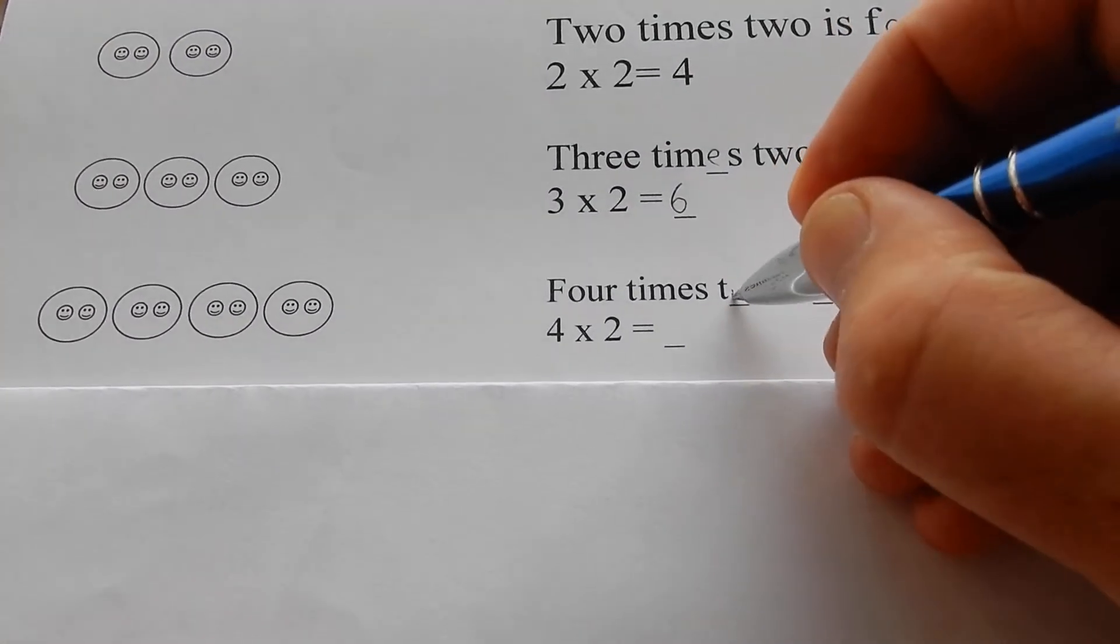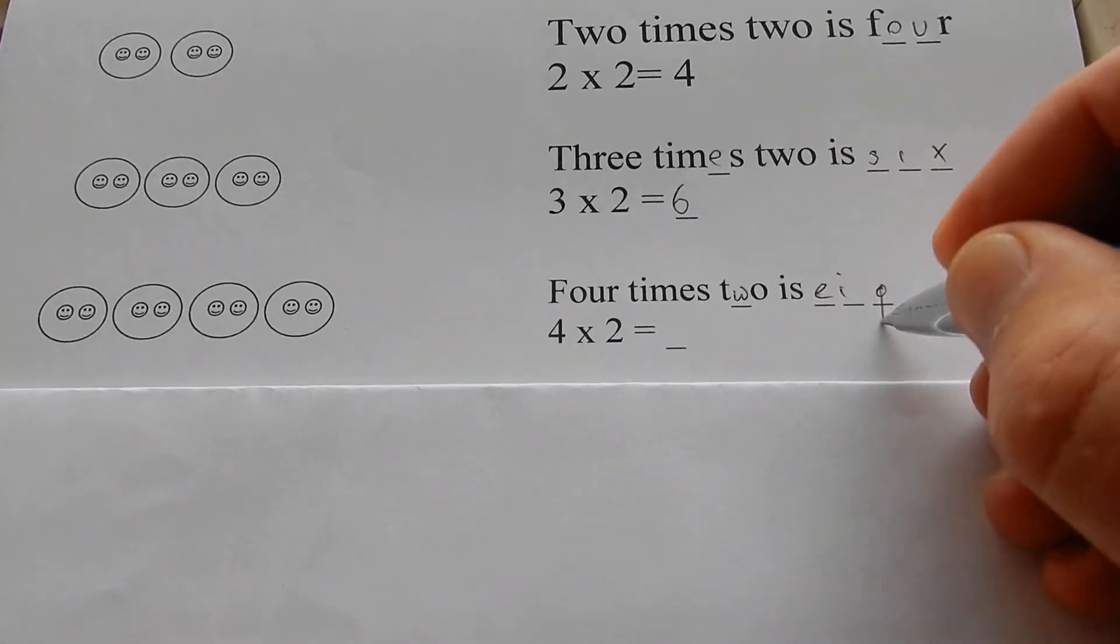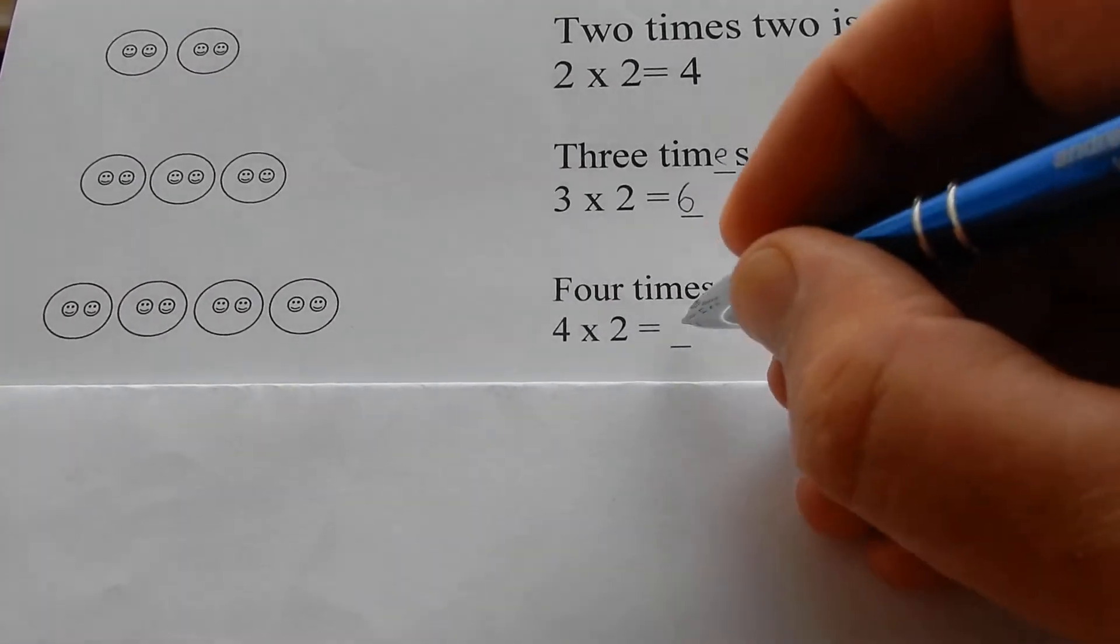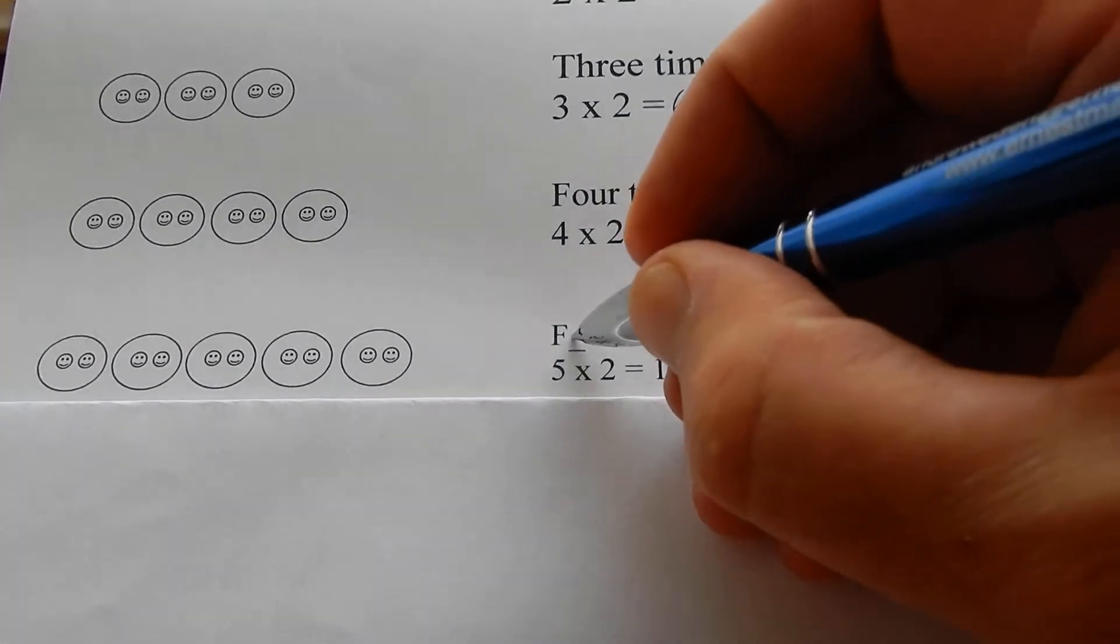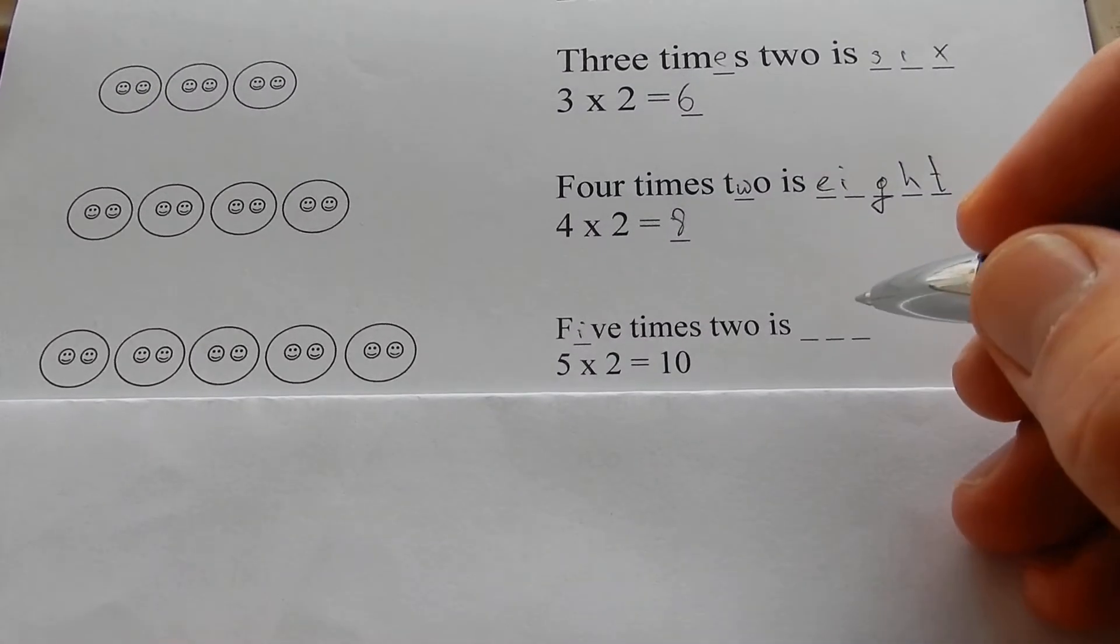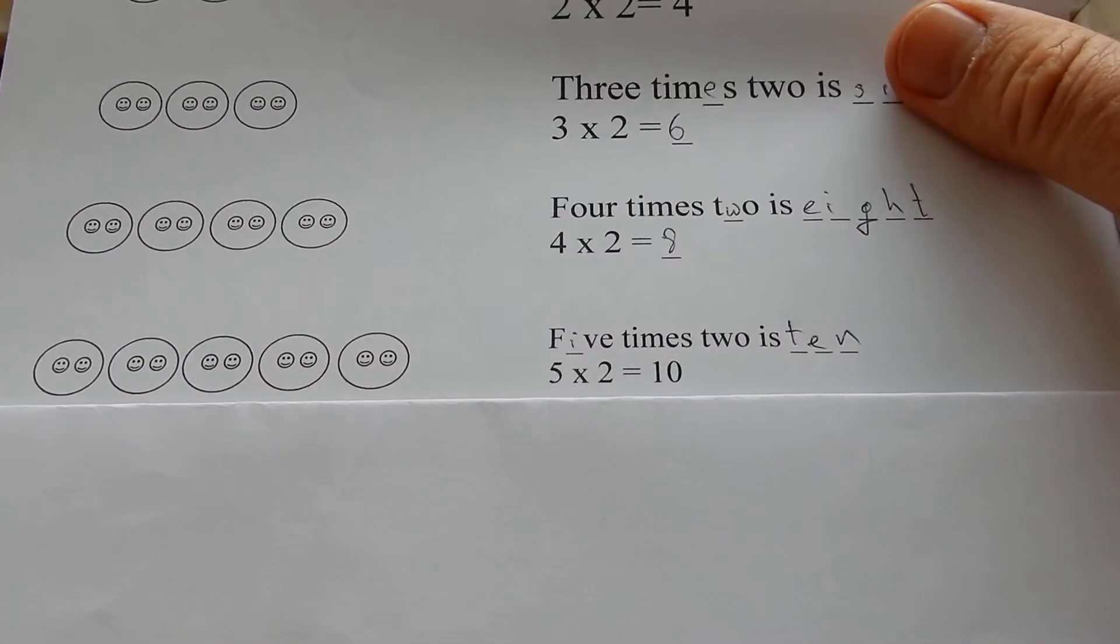Four times two is eight. Eight faces. Five times two is ten. Ten faces.